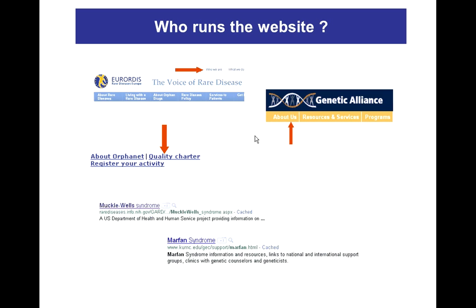When evaluating a document found through a Google search, its URL often provides useful information. For example, .gov identifies a government organization, and .edu identifies educational sources.